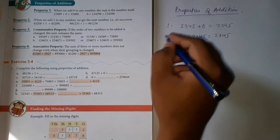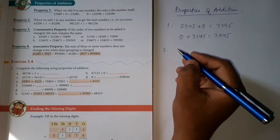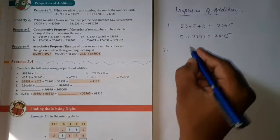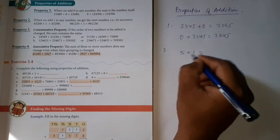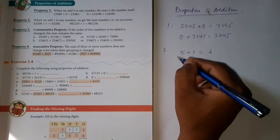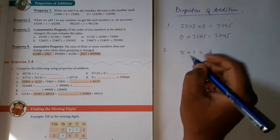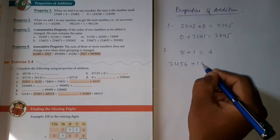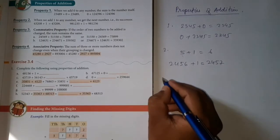Property two: when we add one to any number, we get the next number. When you add one to any number, like five plus one equals six, five gives the next number. So when you add one to any number, like two thousand four hundred fifty-six plus one, you get the successor, two thousand four hundred fifty-seven.